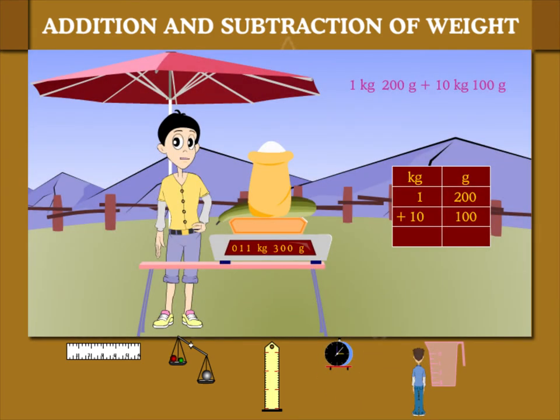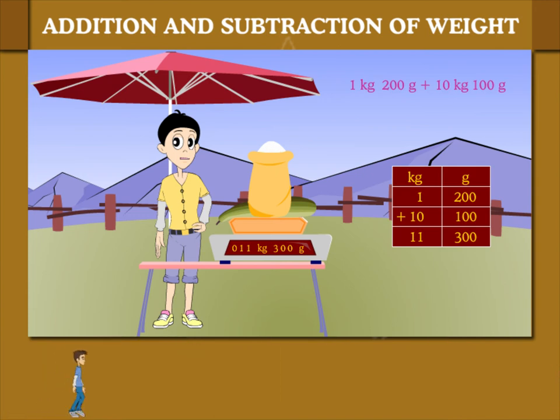He now puts both things and the weight is 11 kilogram, 300 grams. So 1 kilogram, 200 grams plus 10 kilogram, 100 grams is 11 kilogram, 300 grams.